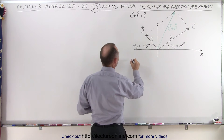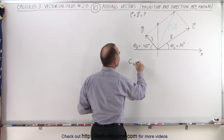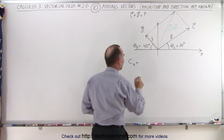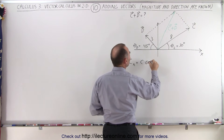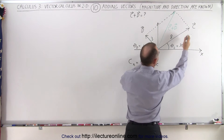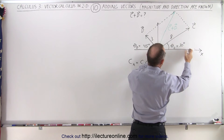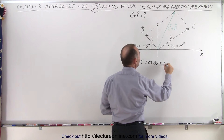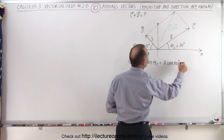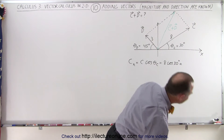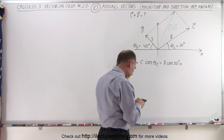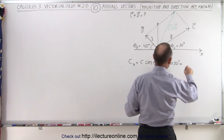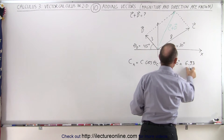Let's find C sub x — the x component of C. If I don't draw a little arrow on top of it, I'm only finding the magnitude of that component. That would be equal to C times the cosine of theta sub C, which is the projection of C onto the x-axis — the adjacent side to the angle, which is why we use the cosine. So that's 8 times the cosine of 30 degrees, which equals 6.93. That is the magnitude of the x component.